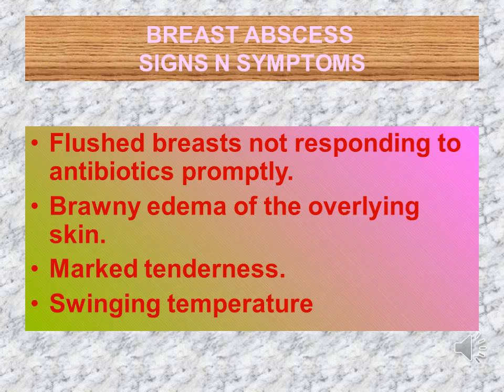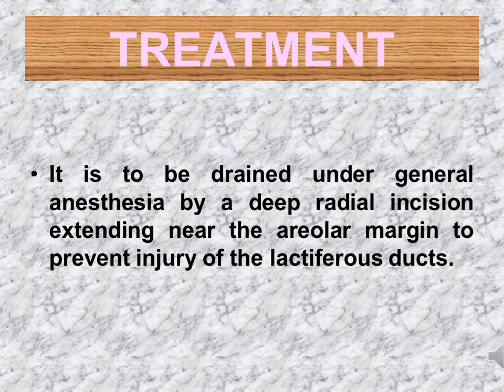Signs and symptoms of breast abscess: Flushed breast not responding to antibiotics promptly. If the breast is hot or red, it will not respond immediately after giving antibiotics. Brawny edema of the overlying skin, marked tenderness, fluid accumulation inside the breast, and swinging temperature. Treatment: The abscess is to be drained under general anesthesia by a deep radial incision extending near the areolar margin to prevent injury to the lactiferous ducts. The accumulated fluid under the breast is drained out by giving an incision at the areolar margin.